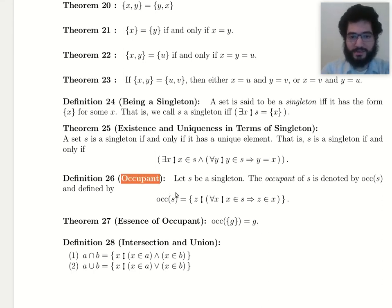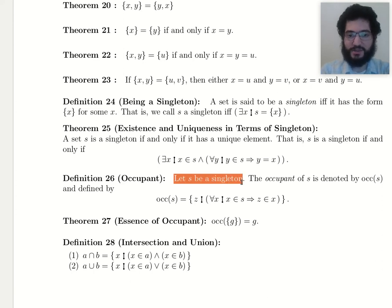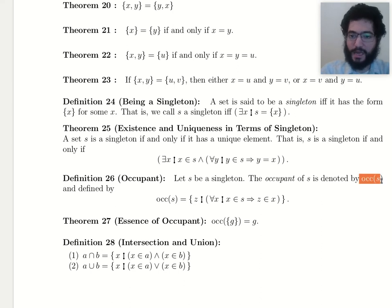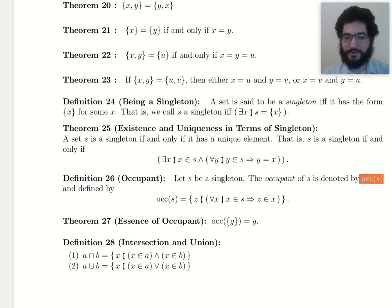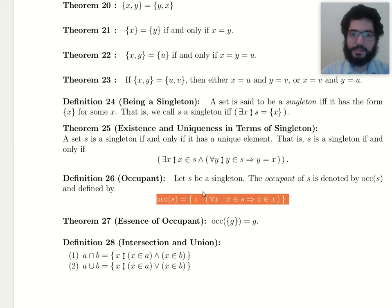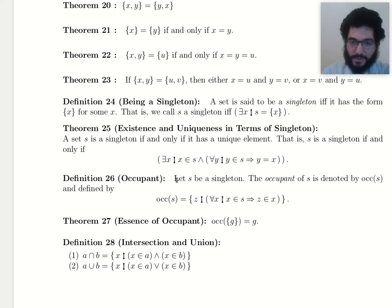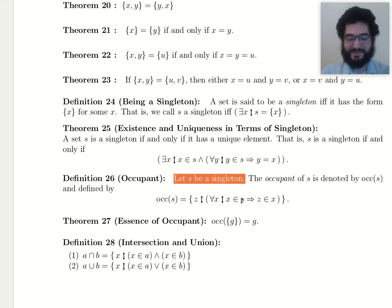Next I want to define the concept of occupant. The definition is a little funky. One thing to first notice is that the definition starts with an assumption — and I think we've never seen that before, where a definition starts with an assumption. It starts with 'assume S is a singleton,' and then it proceeds to define oc S. It's not banning you from ever using the definition when the assumption does not hold — it's not like you have to check whether S is a singleton every time you use this definition.